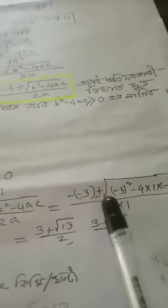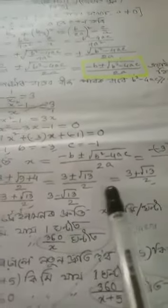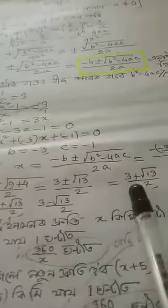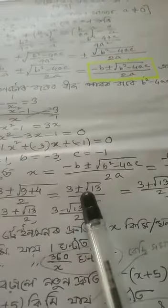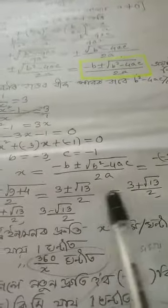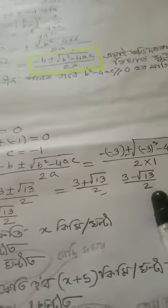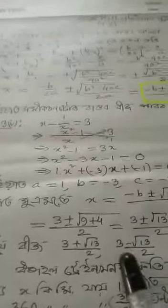Minus 4 into 1, minus of 2 into a. A means 1, so let's take a look: 3 plus-minus root 13 by 2, which gives 3 plus root 13 by 2, or 3 minus root 13 by 2.